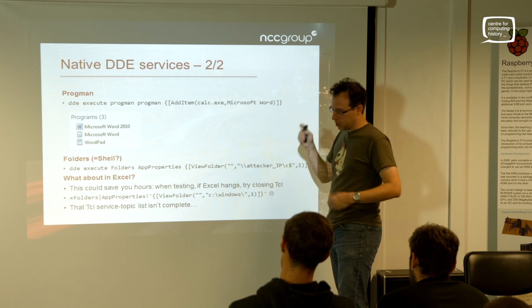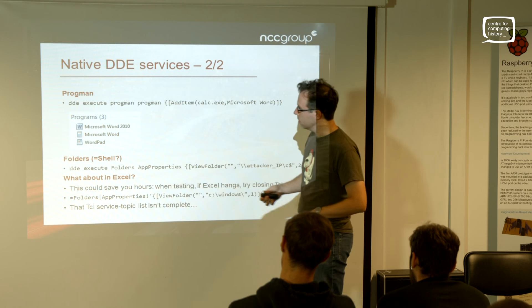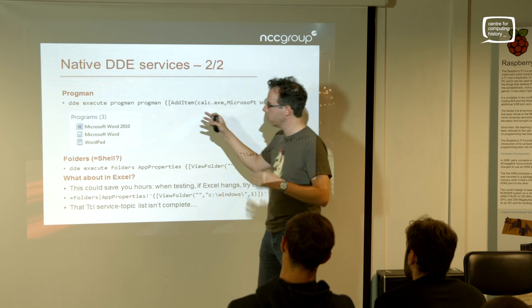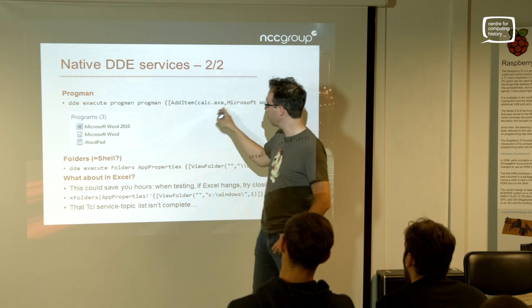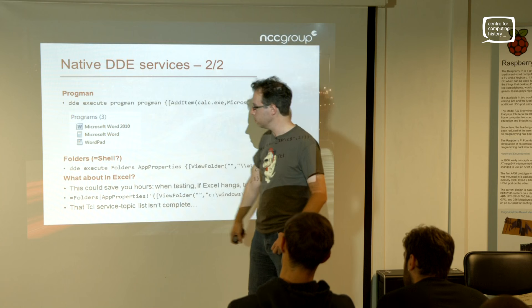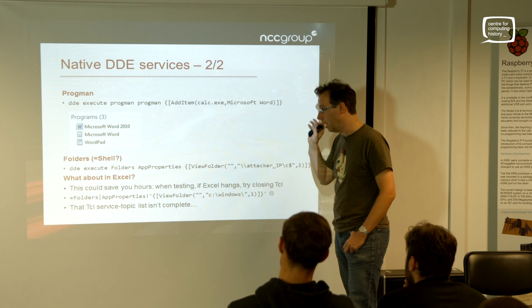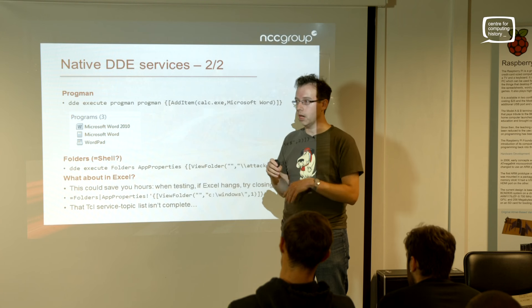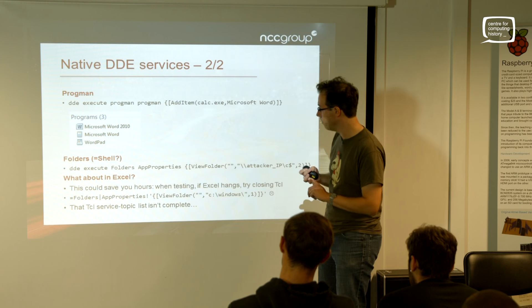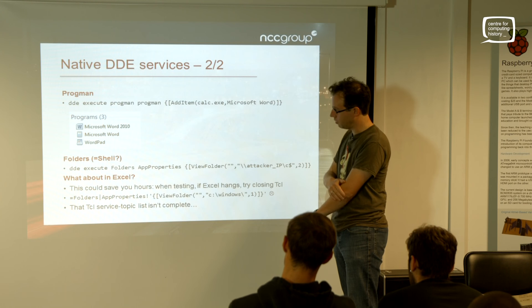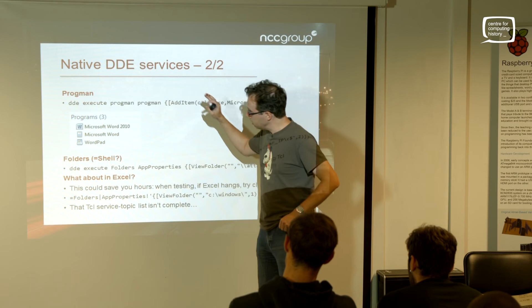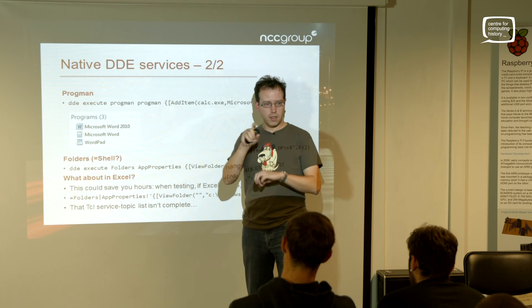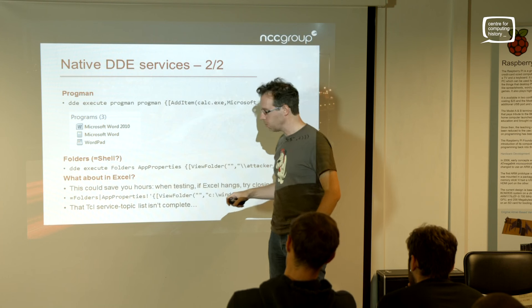What about these other DDE services? There was Progman, Folders, and Shell - documentation is pretty scant. Progman seems to control shortcuts, so if you run that command you can populate people's start menus with bogus programs. The Explorer Folders service can get it to pop open and connect off to different IPs - so if you've got something like Responder running you could capture NTLMv2 traffic and have a go cracking passwords. This is starting to look interesting, but it's pointless if I can't get it working inside Excel.